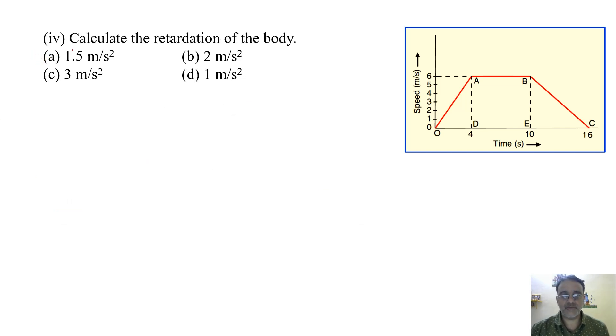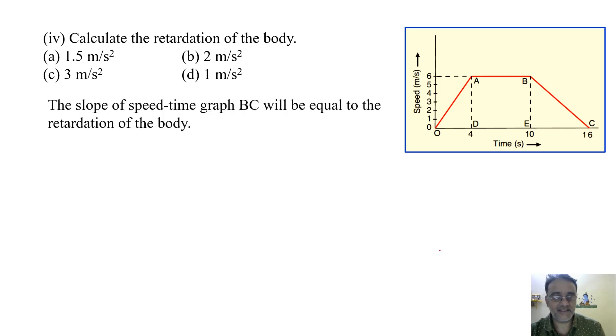Now we will move towards the next question. Calculate the retardation of the body. So retardation hum logo ko kahan pe mila? Yaha pe BC mein. So the slope of BC. The slope of BC again, BE upon EC. The slope of speed-time graph BC will be equal to the retardation of the body. Kyonki slope downward ki taraf hai. And the slope will be equal to BE upon EC. And BE is 6 meters per second and EC is 6 seconds.